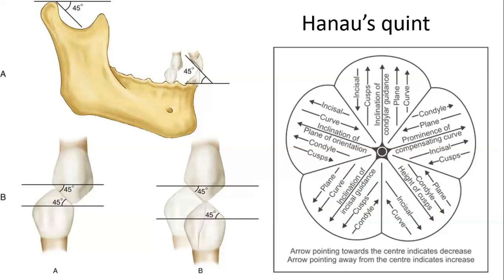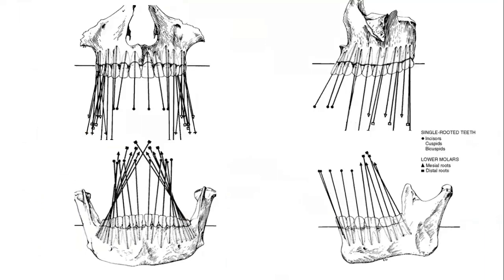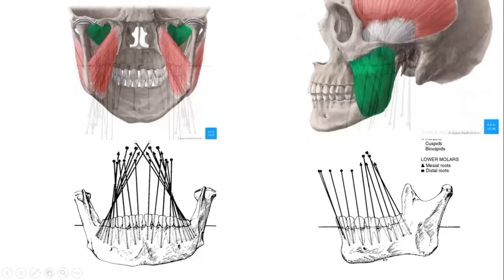Now, how do compensating curves work, why are they called compensating curves, and what are the different types? In natural dentition, looking at the coronal section, if we see the maxilla from anterior to posterior, the inclination of teeth changes — the molars are tilted buccally. In the mandible going posteriorly, the molars are inclined lingually. In the sagittal section, the maxillary molars are inclined distally and the mandibular molars are inclined mesially.